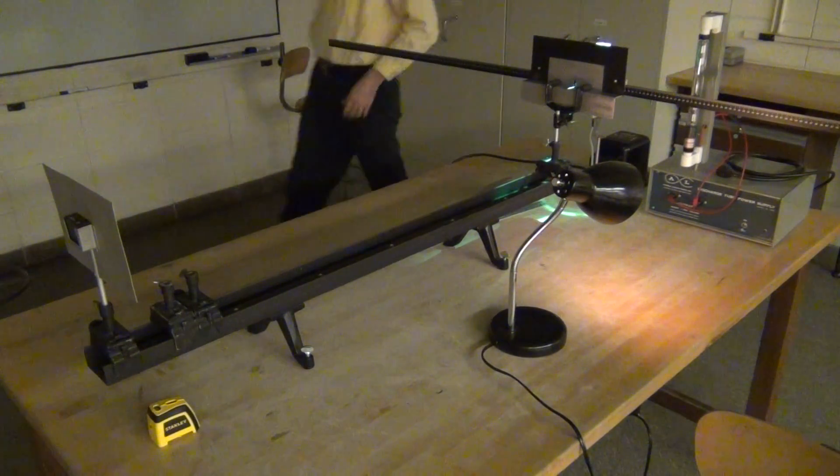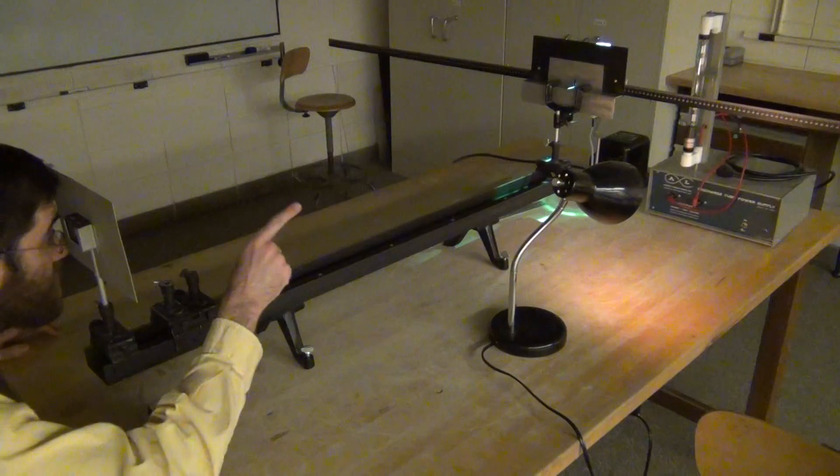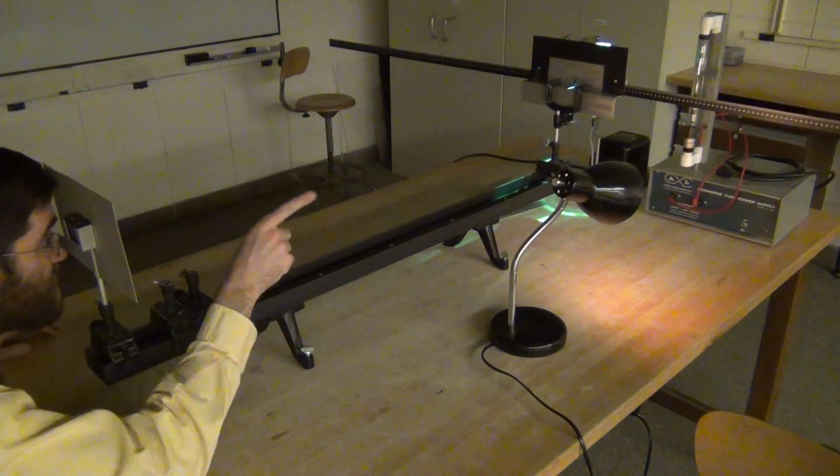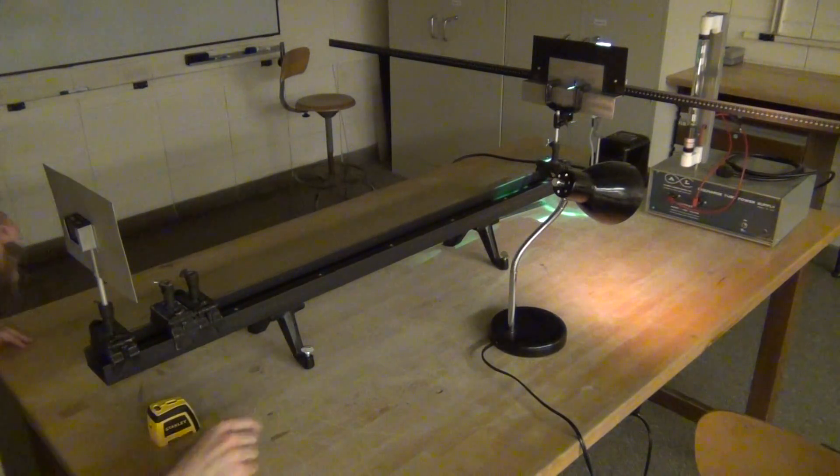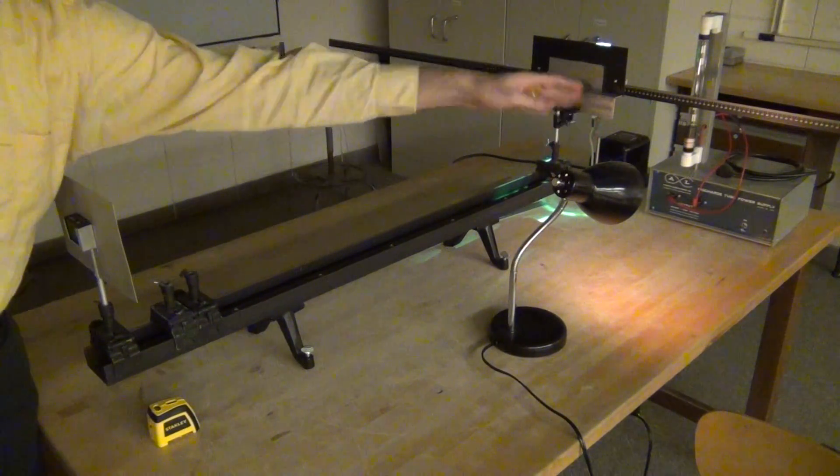And then looking through our diffraction grating towards the rulers, we should see bright lines, not in the center, but off on both sides.